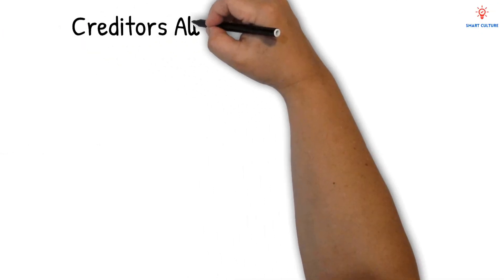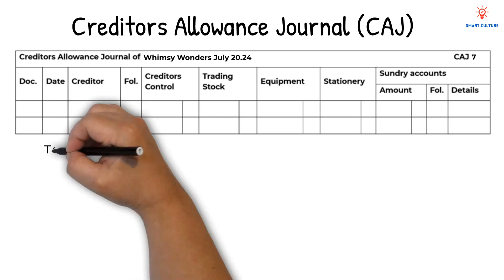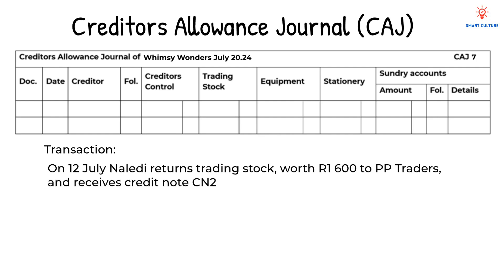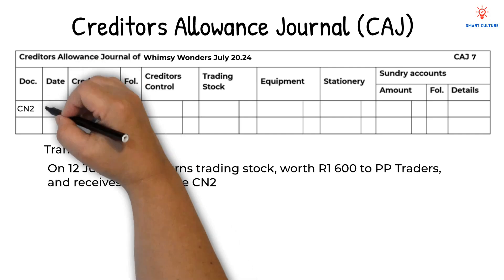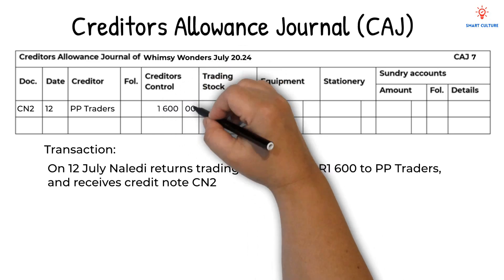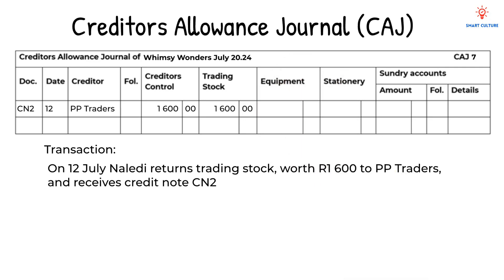Let's now look at the Creditor's Allowance Journal. This journal has similar columns to the CJ, but it's used to record returns — items sent back to the supplier. On the 12th of July, Naledi returns Trading Stock worth R1600 to PPTraders and receives Credit Note CN2. We record it as follows: the document is CN2, the date is the 12th, the creditor is PPTraders. We always record the amount in the Creditor's Control column, and since this was for Trading Stock, we also record the amount in the Trading Stock column.